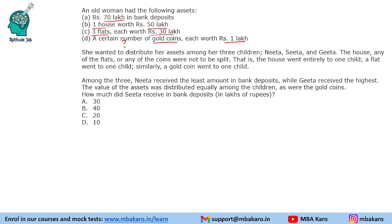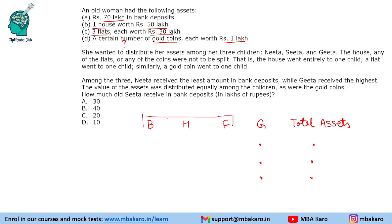The value of assets was distributed equally among the children, as were the gold coins. The four asset types are bank deposit, house, flat, and gold coins. Since gold coins are equal and total assets are also equal, the assets from bank deposit plus house plus flat should be equal for all three people.